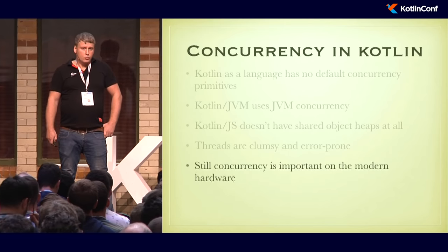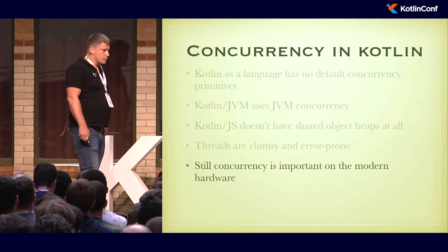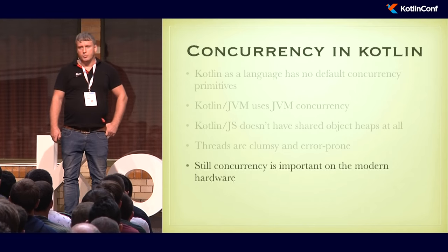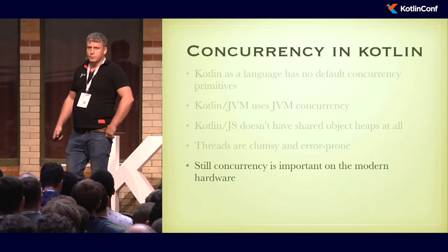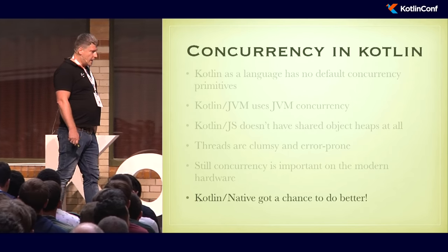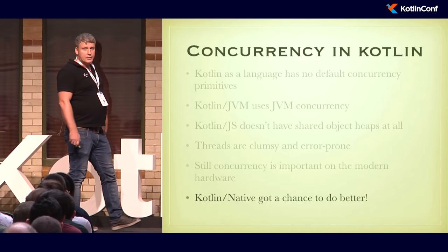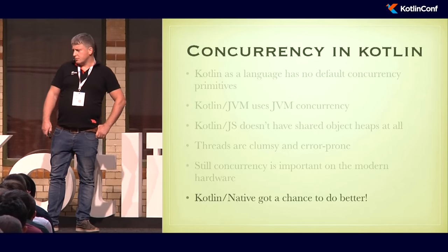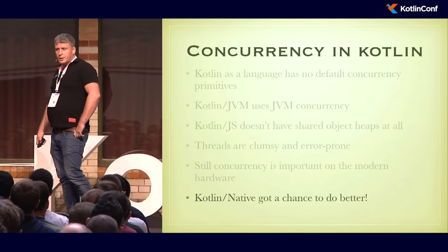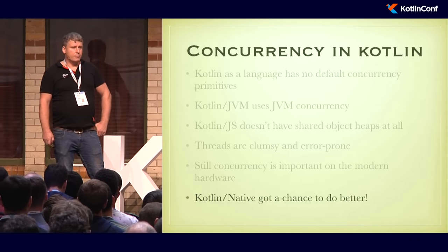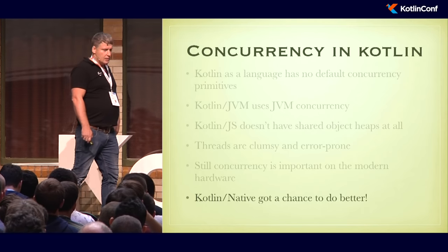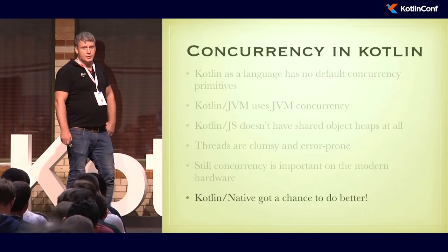We still want concurrency because we have multiple machines, GPUs, and other forms of concurrent execution. It's pretty common knowledge that threads as concurrency primitives are somewhat clumsy and error-prone. But in Kotlin Native, unlike other flavors of Kotlin, we control the runtime, which means we have way better flexibility and we can try to do the concurrency story better.